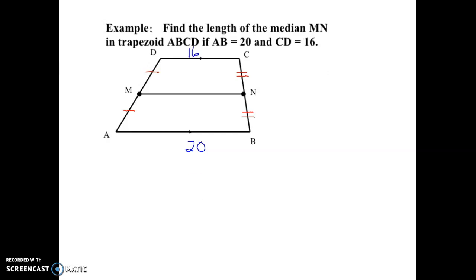So if I add my two bases, 20 plus 16 would be 36. And next I would divide that by 2. I would get an 18 for my length, and that would be the length of my median or segment MN.